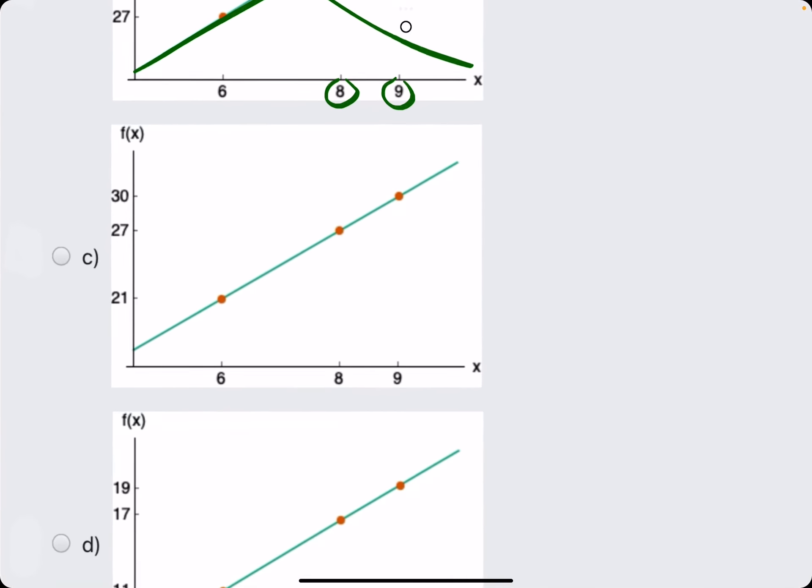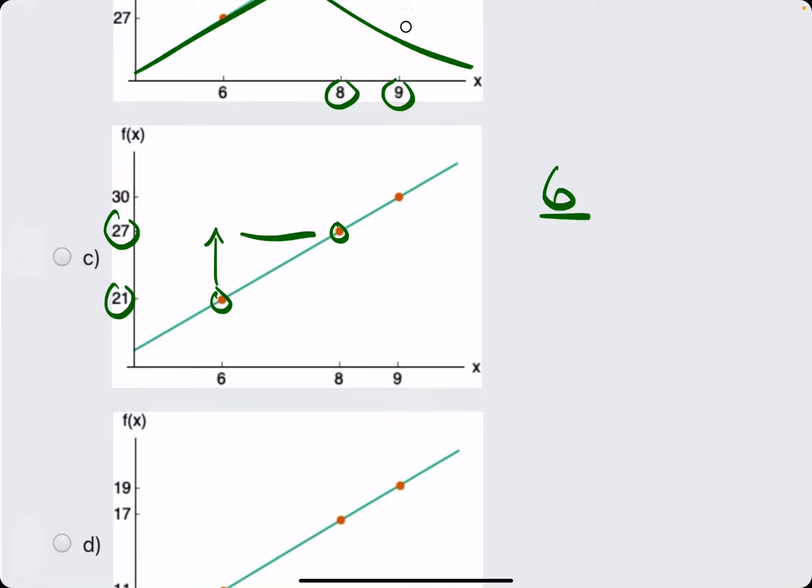We move on to option C, where we have a rise from 21 to 27 of 6 and a run from 6 to 8 of 2. So we have 6 over 2, which is 3.